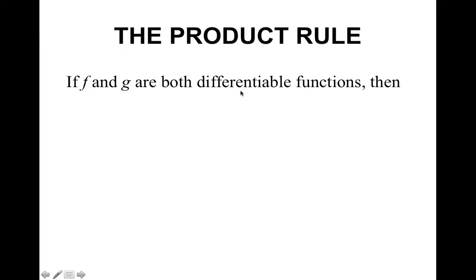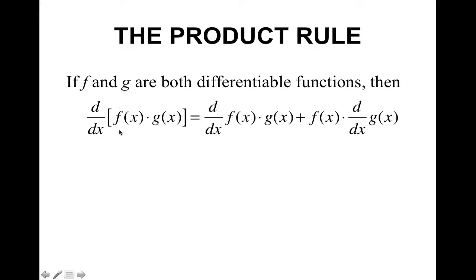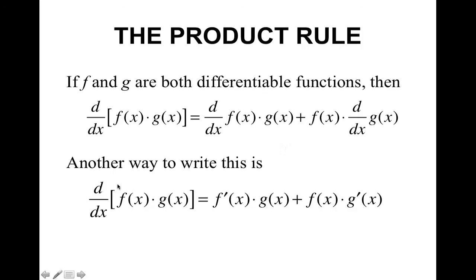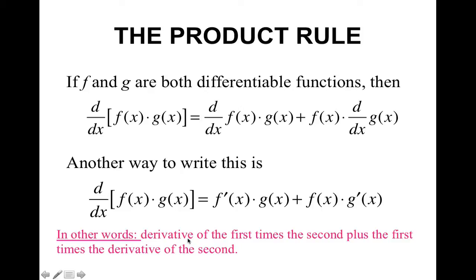The product rule says that if f and g are both differentiable functions, then when you have two functions multiplied together, you take the derivative by the following: the derivative of f times g, plus f times the derivative of g. Another way this can be written using tick mark notation is f prime times g plus f times g prime. The way I remember this is: derivative of the first times the second, plus the first times the derivative of the second.